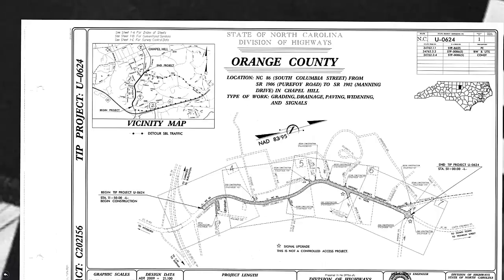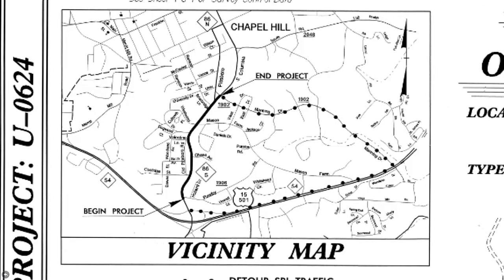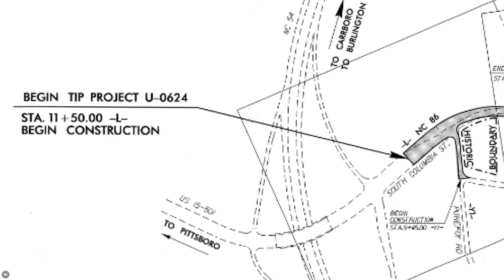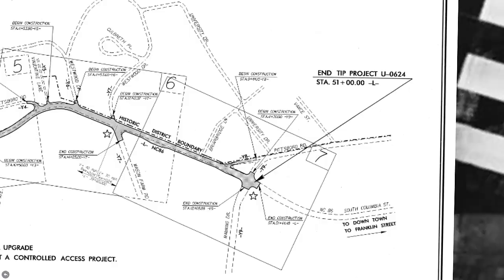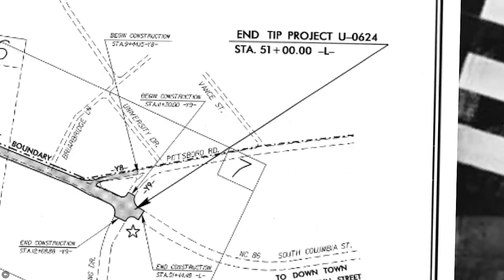We also have a vicinity map showing roughly where the project is in relation to other roads in the network. The project begins at station 11 plus 50. This is known as the L line, which is the main road of the project. It is intersected by other roads known as Y lines, numbered Y1 through Y9, and the project ends at station 51.